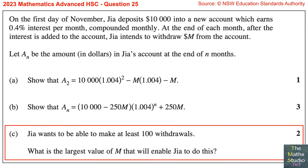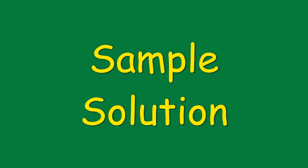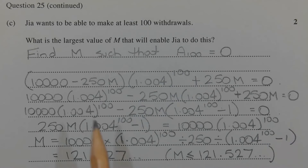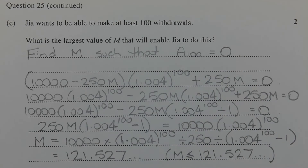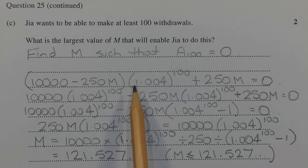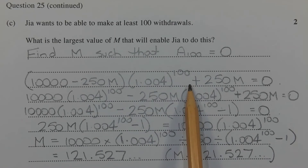Part C. GIA wants to be able to make at least 100 withdrawals. What is the largest value of M that will enable GIA to do this? We want to find a value of M such that A100 — the amount in the account after the 100th withdrawal — is $0. If M is larger than that, then GIA cannot make 100 withdrawals.